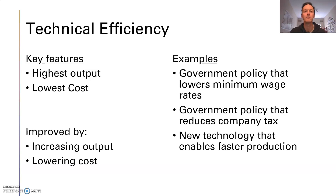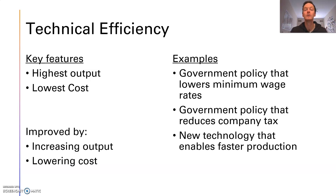In your answers, all you need to do is show how a particular policy or factor is going to do one of those two things. Show how it either enables businesses to make more stuff, or show how it lowers the cost of production for businesses, and you're going to prove how technical efficiency is improved.